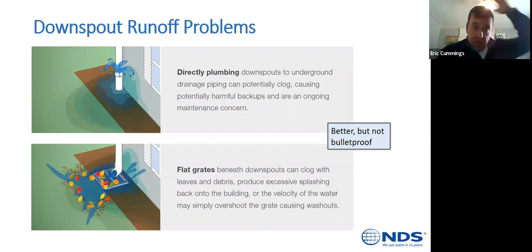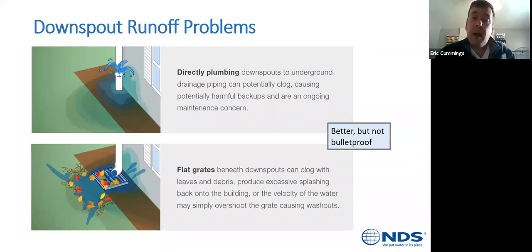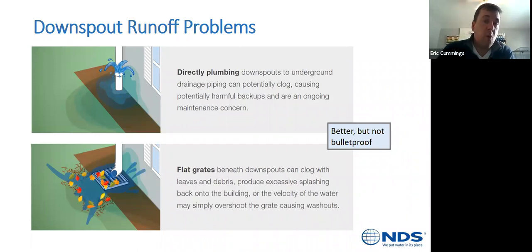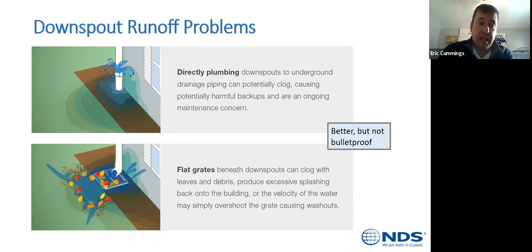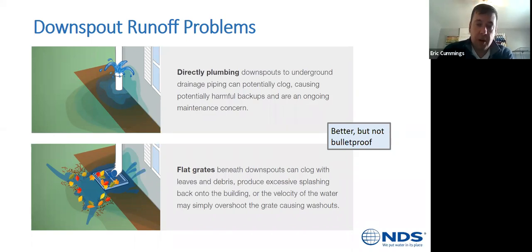For downspout runoff, direct plumbing with four-inch sewer and drain pipe and fittings to pipe it directly into the ground is a common solution — with advantages and disadvantages. Flat grates with catch basins is another commonly used solution.